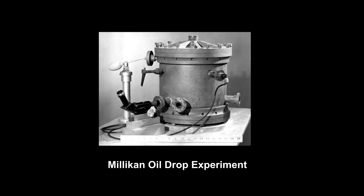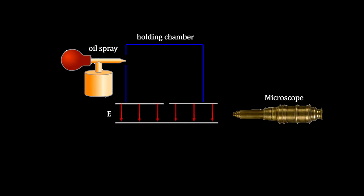The experiment was performed by spraying a mist of oil droplets into a chamber above two metal plates. Some of the oil droplets became electrically charged by friction as they were sprayed through the nozzle. A few droplets would enter the space between the parallel plates.